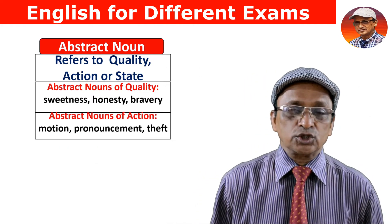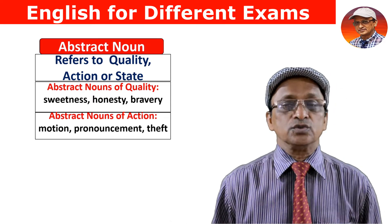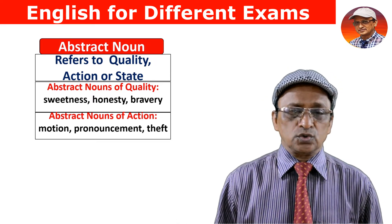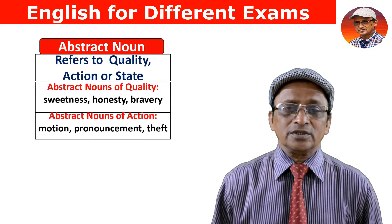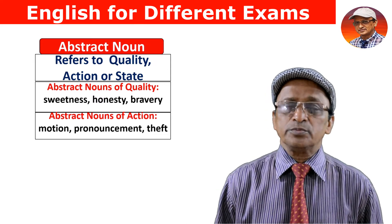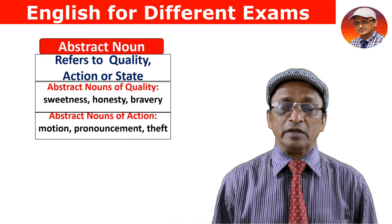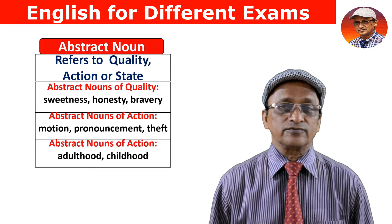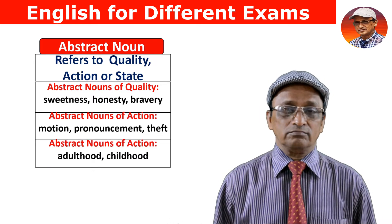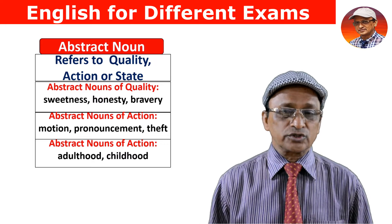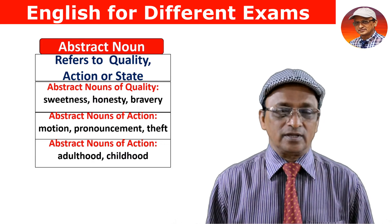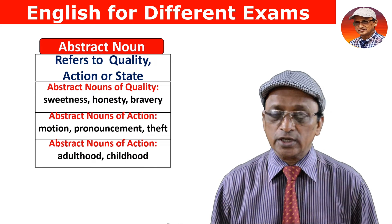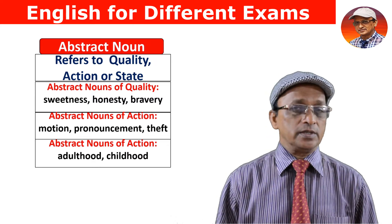Talking of action: motion, pronouncement — these are action words and abstract nouns. Talking of state, meaning different stages of time: adulthood and childhood both talk of state, so adulthood and childhood are abstract nouns. These are the five categories of nouns.